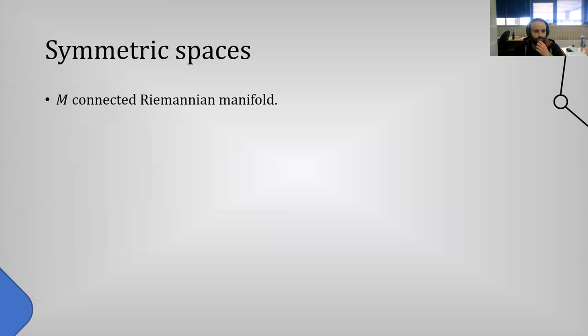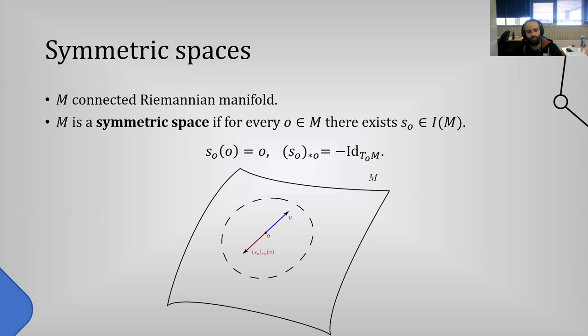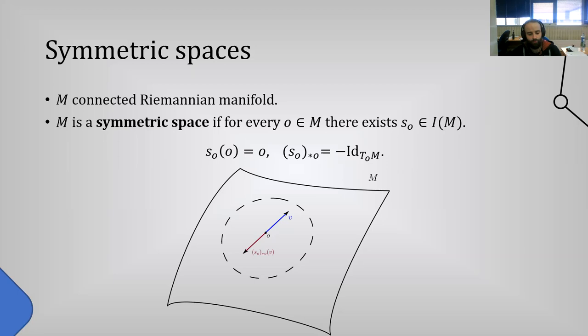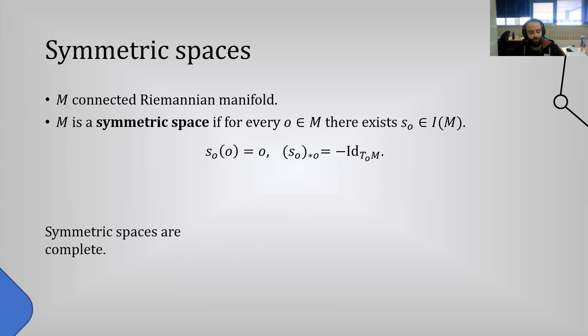I'm going to talk about two decompositions which are the most important for isometry algebras in symmetric spaces of non-compact type: the Cartan decomposition, which allows us to translate every geometric element of a symmetric space into Lie-theoretic terms, and the Iwasawa decomposition, which serves as a sort of Gram-Schmidt process for isometries of a non-compact symmetric space. To make sure everyone is on the same page, I'll briefly recall what a symmetric space is. Let M be any connected Riemannian manifold. We say M is a symmetric space if every point o admits an isometry that fixes that point and acts on the tangent space as minus the identity map.